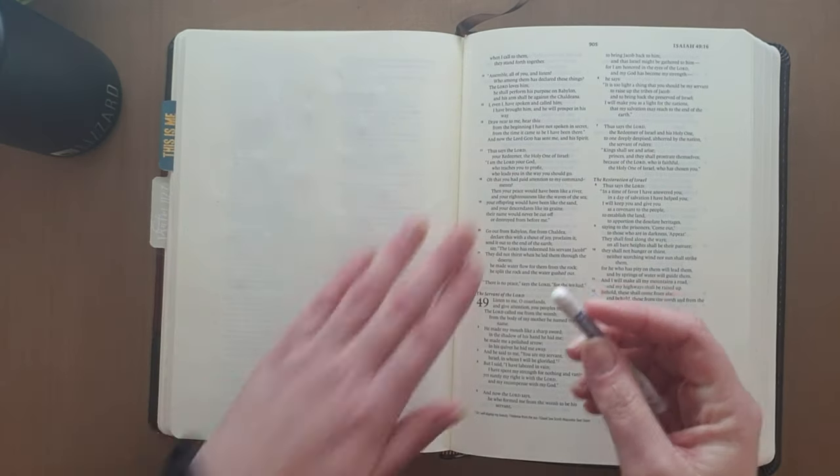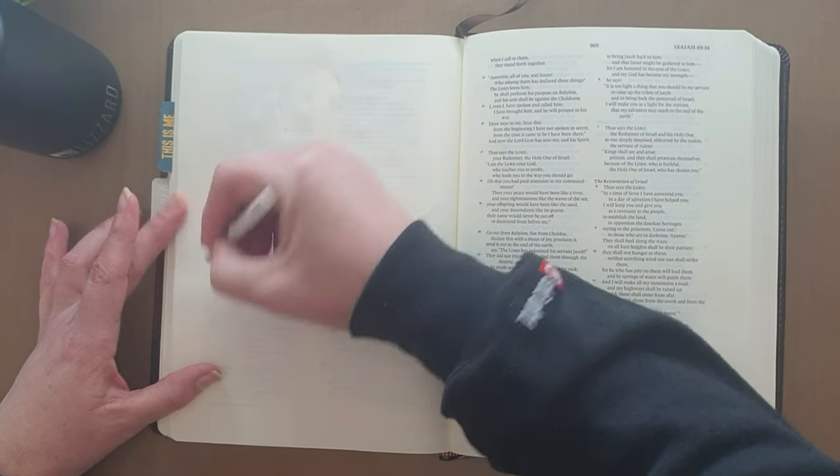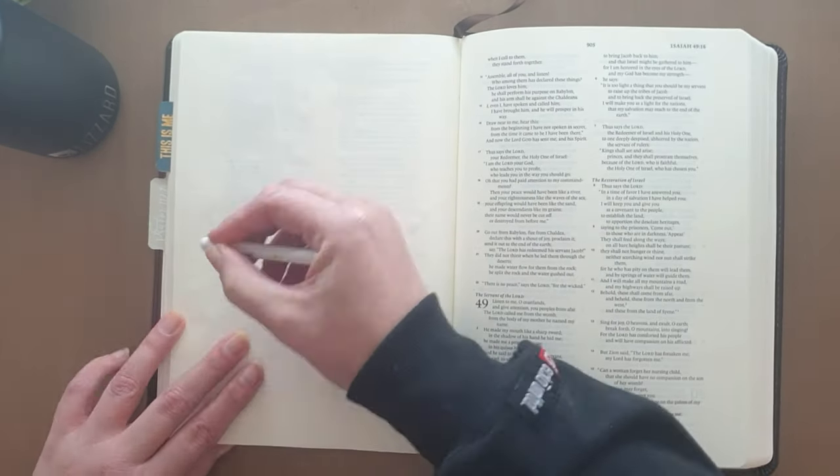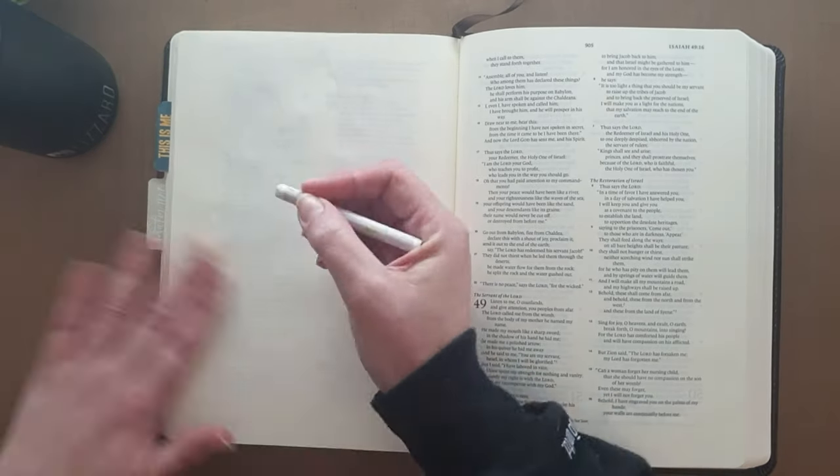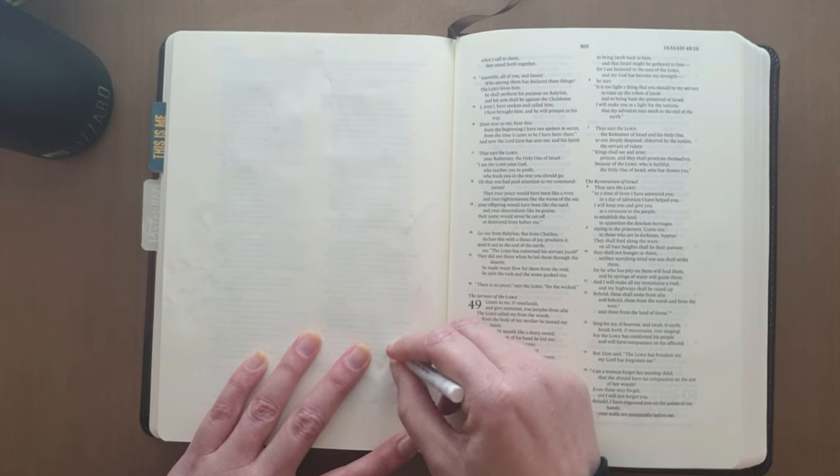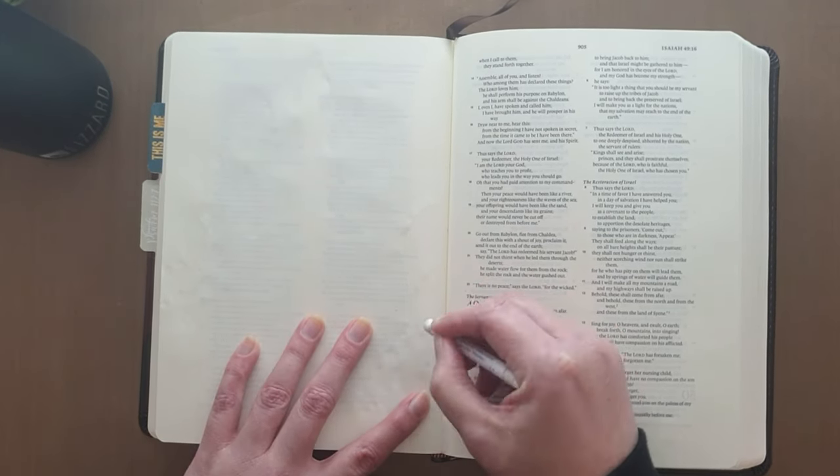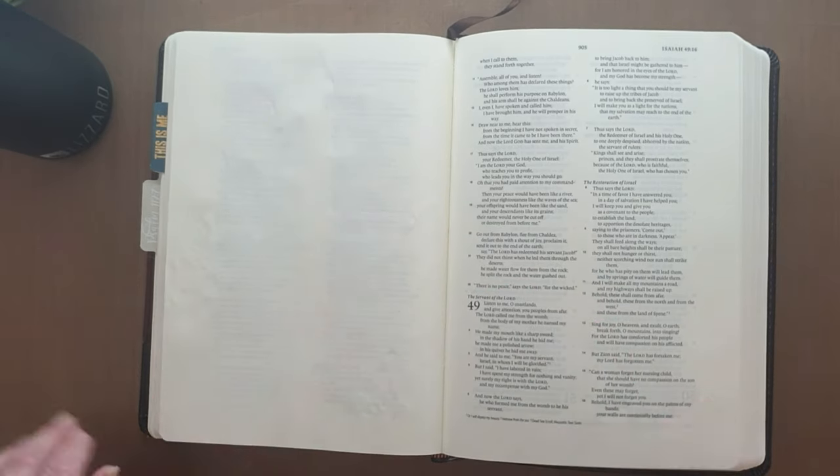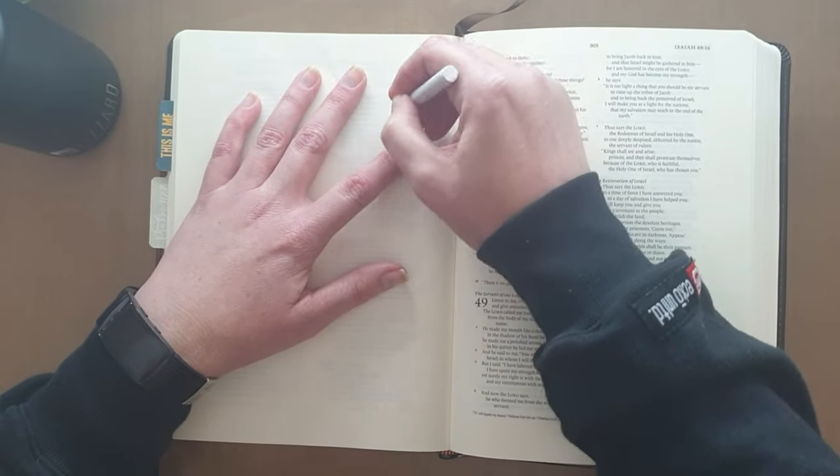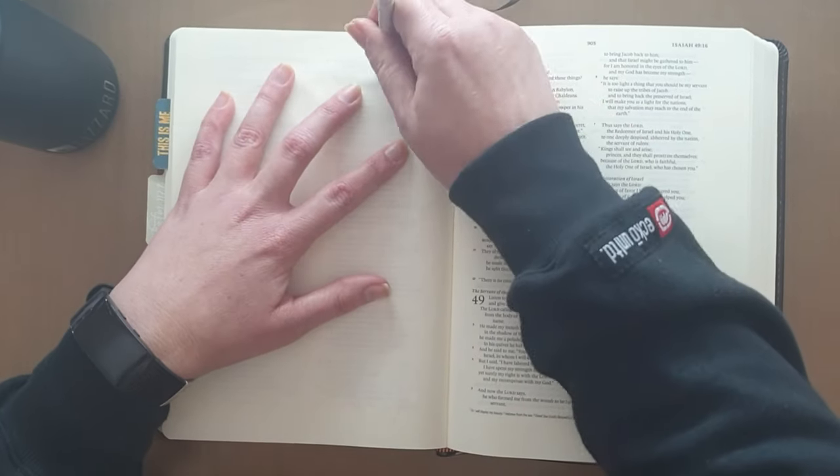But the verse that I'm doing is in Isaiah 49 verse 16 and I'm doing it in my interleaved, my ESV interleaved. And at the moment you can't really see what I'm drawing because I'm drawing with a white crayon. But you saw me trace my hand and I'm just doodling some random shaped flowers around my hand. I can see where I drew the hand, but the camera obviously doesn't pick it up.